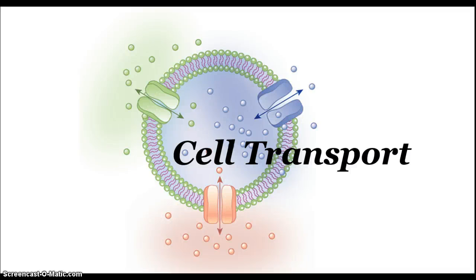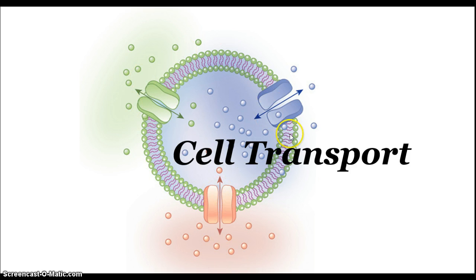Today I want to talk about cell transport. This diagram shows a simplified model of the cell. The watery environment on the inside and the outside of the cell cannot usually penetrate the cell membrane easily. So you have a number of components of the cell membrane, including these transport proteins that are specific for certain materials, allowing them to go in and out of the membrane as needed.